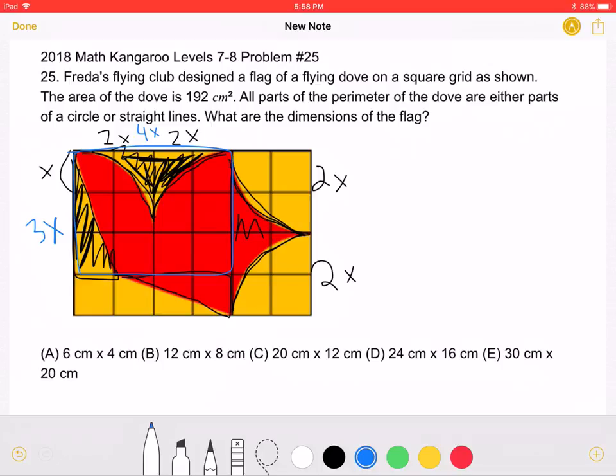In the problem, it states that the area of the dove is 192 centimeters. So we can set 12X squared equal to 192. This will lead to X squared is equal to 16, and X being equal to 4.